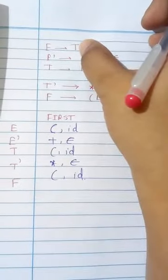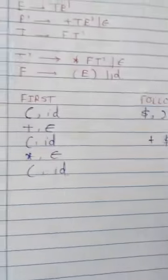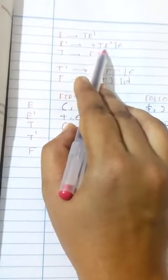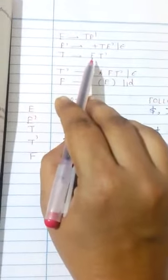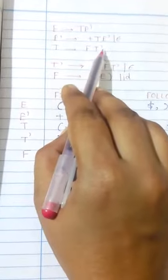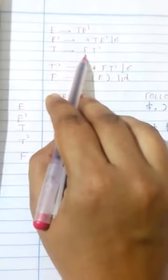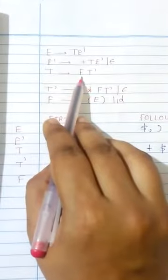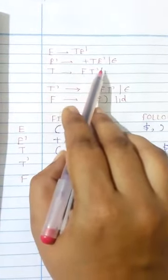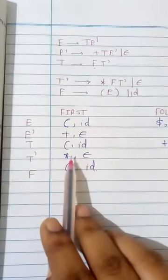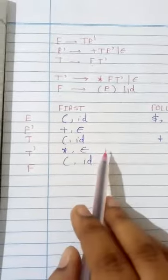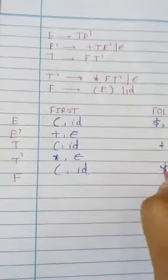So FOLLOW(T) = {+, $, ')'}. Next, in T → F T′, F is followed by T′ which is a non-terminal, so FOLLOW(F) = FIRST(T′). FIRST(T′) = {*, ε}. So we add '*' to FOLLOW(F). Since FIRST(T′) contains ε, F becomes the last element, so FOLLOW(F) also includes FOLLOW(T) = {+, $, ')'}.